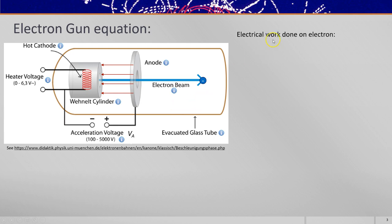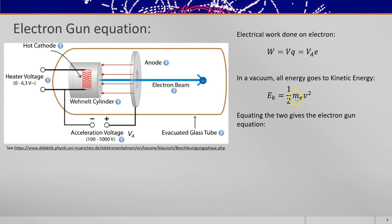If we equate the energies we can say that the electrical work done on the electron as it passes through this field, work done is voltage times charge. And so that's VA for the accelerating voltage multiplied by E, the charge on one electron. After it's passed through that field it will have kinetic energy. And if all the energy goes to kinetic energy, kinetic energy is a half ME V squared, with ME being the mass of the electron. We can equate them and say that a half ME V squared equals VA times E. And so this formula gives you the velocity of electrons accelerated through a voltage VA where they have charge E and mass ME.